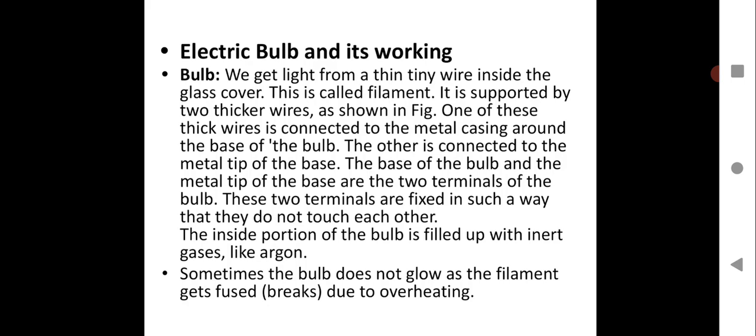Let us learn about the electric bulb and its working. A bulb is a very important device which was discovered and has had lots of contribution in human progress and in day-to-day life. We get light from a thin, tiny wire inside the glass cover — this is called the filament. It is supported by two thicker wires as shown in the figure.